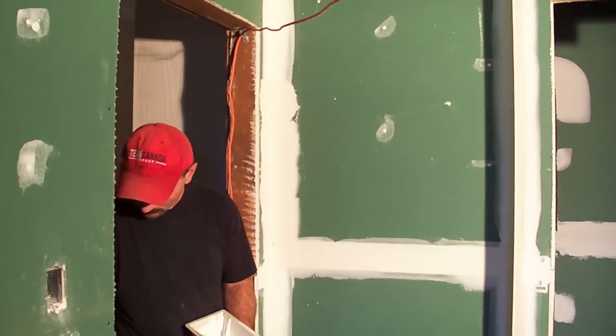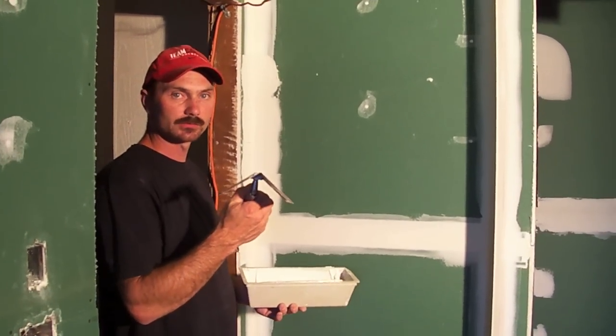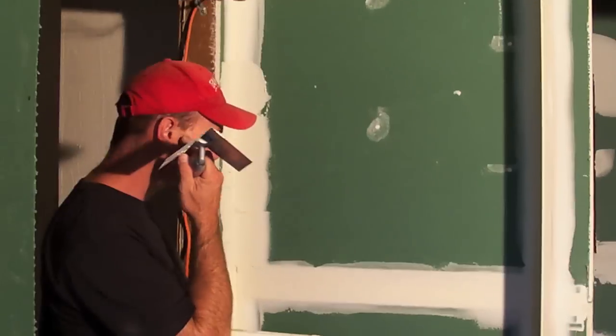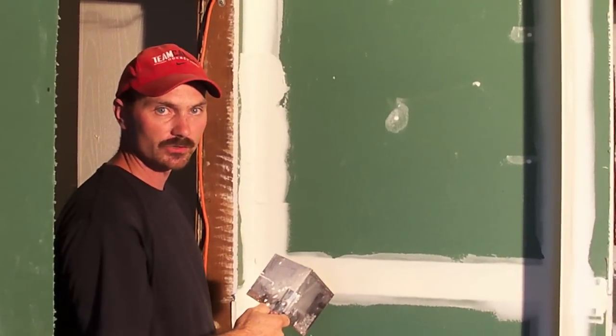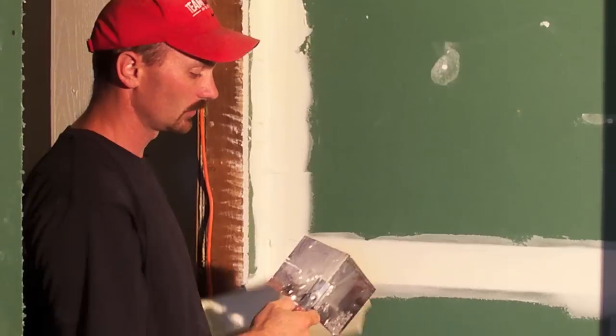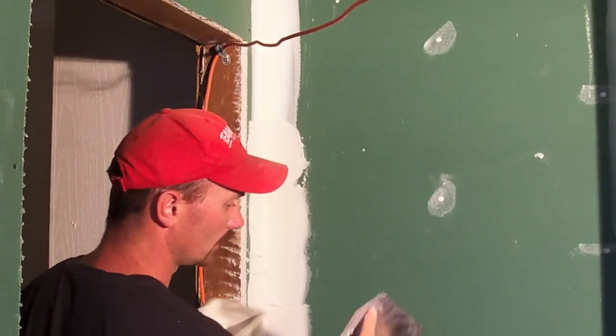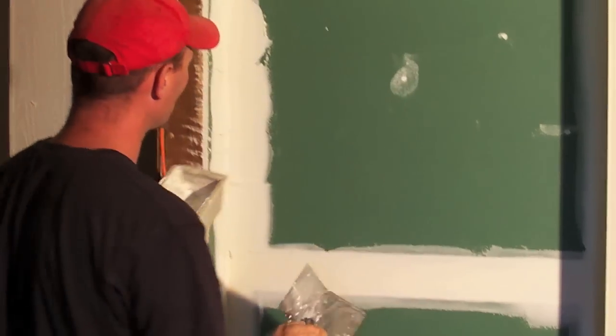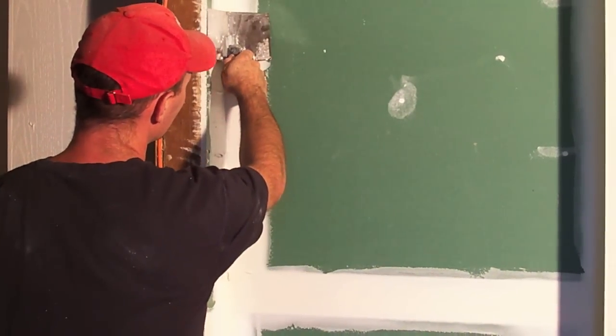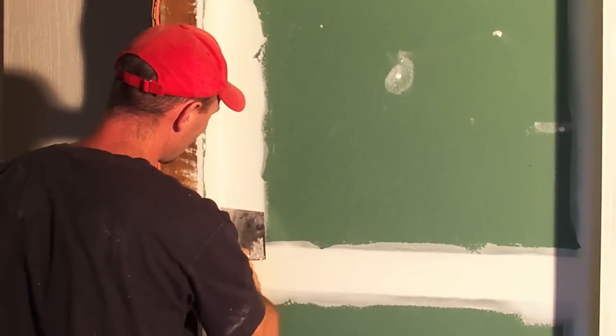Now I'm going to switch to the inside corner trowel. And you just want to basically press this into the corner and draw it down or up, whichever direction you're more comfortable using it. Press it into the corner, the top point with more pressure than the bottom, otherwise you're just going to plow the mud. You want to more or less smooth it out than plow it.